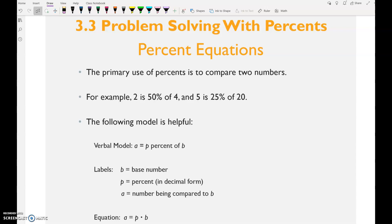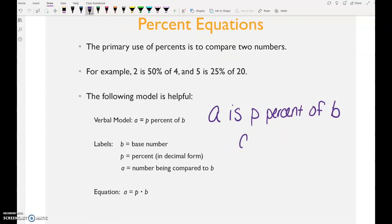So here's a verbal model. I want you to write this out using words. A is P percent of B. And then directly below that write A equals P times B. Is means equals, of means multiply. As long as you know that is means equals and of means multiply you are going to be just fine in this entire section.